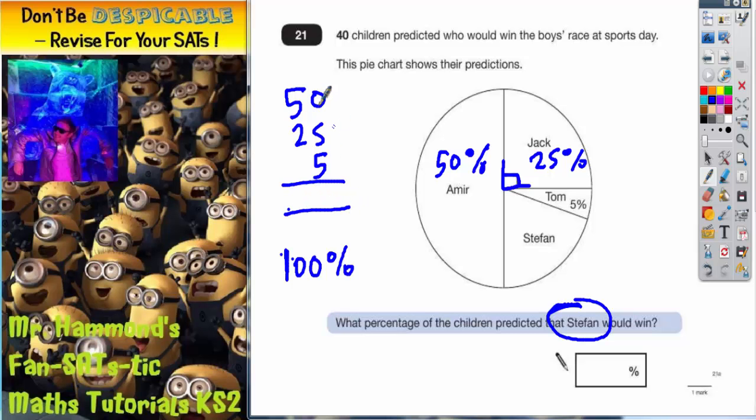So 50 plus 25 plus 5. In the ones column: 0 plus 5 plus 5 is 10. Put your 0 in and carry your 1. 5 plus 2 is 7 plus that 1 is 8. So 80% of the pie chart is Amir, Jack and Tom. What is left to get us from 80% to 100%? It's got to be 20%, and that is what percentage of children thought that Stefan would win.